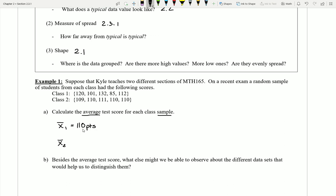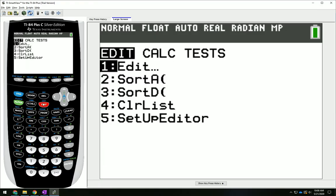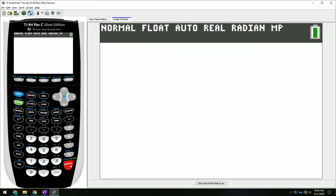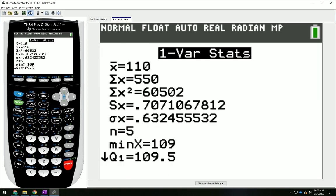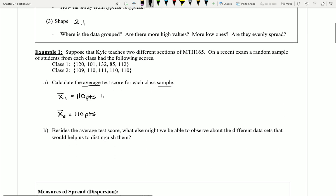Now I can do the exact same thing for class number two and their exam scores. I would just go right back to calculate and I would change my list here to be list number two. When I go down to calculate and I hit enter, notice again I get 110 for my average. So back here I can write 110 points. Now this is kind of interesting, both students from these classes, these samples, have the exact same average.